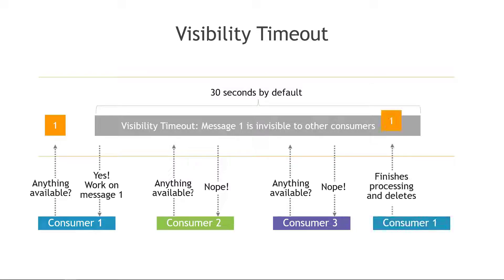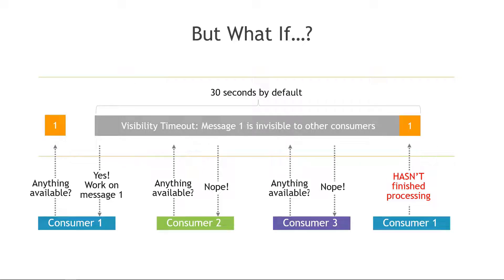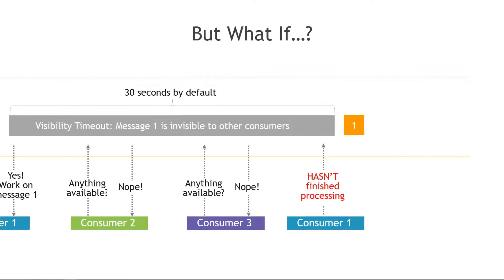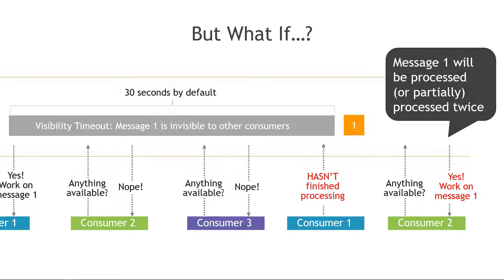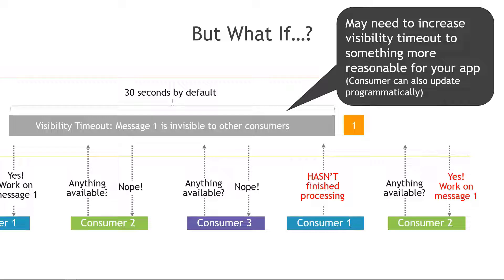In a perfect world, consumer one finishes processing and deletes the message from the queue. But if the timeout period expires before processing is complete, the message gets dropped back into the queue and another consumer picks it up — meaning message one could be processed, or at least partially processed, twice. Depending on your application, that could be very bad, so you may need to increase the visibility timeout.